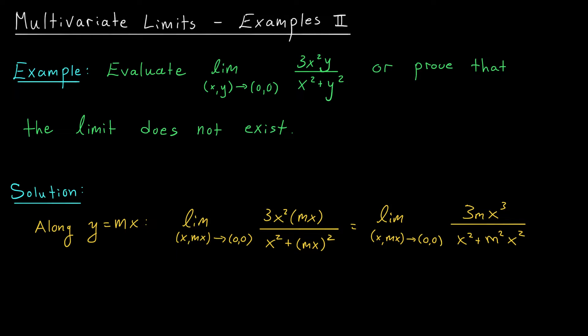Now in our last example, all of the x's were able to cancel out at this point, but that's not the case here. You see, the powers of x are different in the numerator and denominator. So we're only going to be able to cancel up to x². That leaves me with the limit as (x,mx) goes to (0,0) of 3mx divided by 1 plus m². And since m here is a constant, you can see that this limit is going to approach 0.